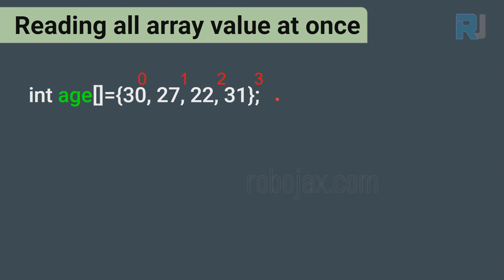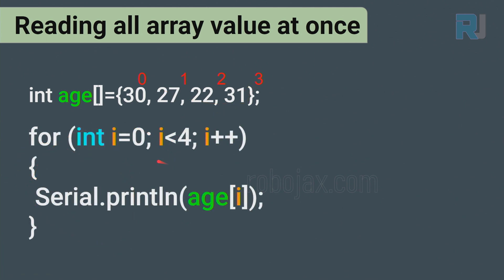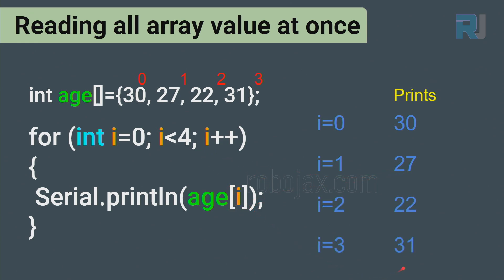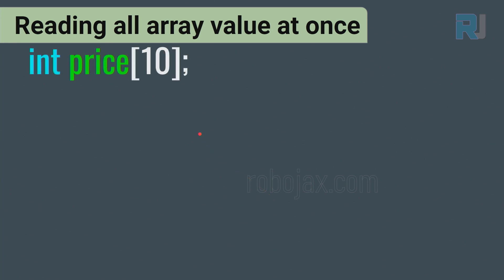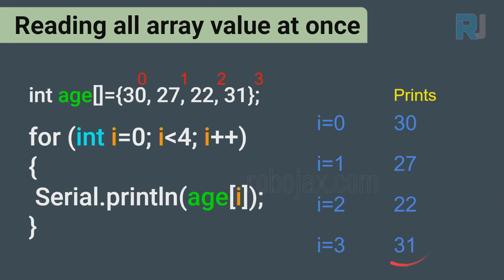Now, if we have an array age[] = {30, 27, 22, 31}, we write the same loop but say Serial.print(age[i]). As i changes from 0 to 3, when i = 0 we get 30, when i = 1 we get 27, when i = 2 we get 22, and when i = 3 we get 31. This way we can read all values.